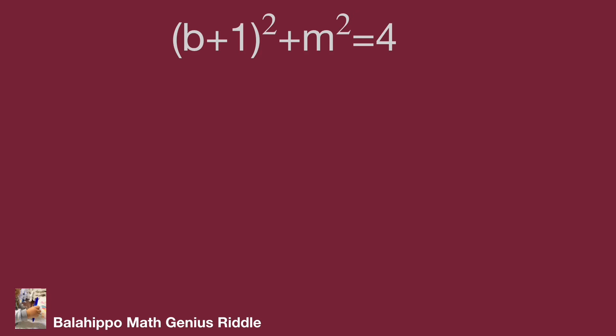To get this result, the two square terms, quantity b plus 1 squared and m squared, could sum as: 4 plus 0, 3 plus 1, 2 plus 2, 1 plus 3, or 0 plus 4. Returning to the given information, a, b, and m are integers, so the square roots of these values must also be integers.